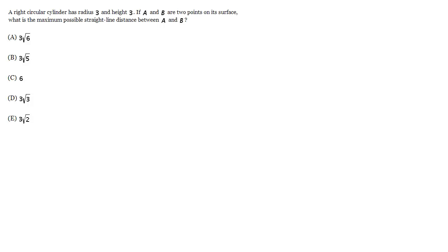A right circular cylinder has radius 3 and height 3. If A and B are two points on its surface, what is the maximum possible straight line distance between A and B?